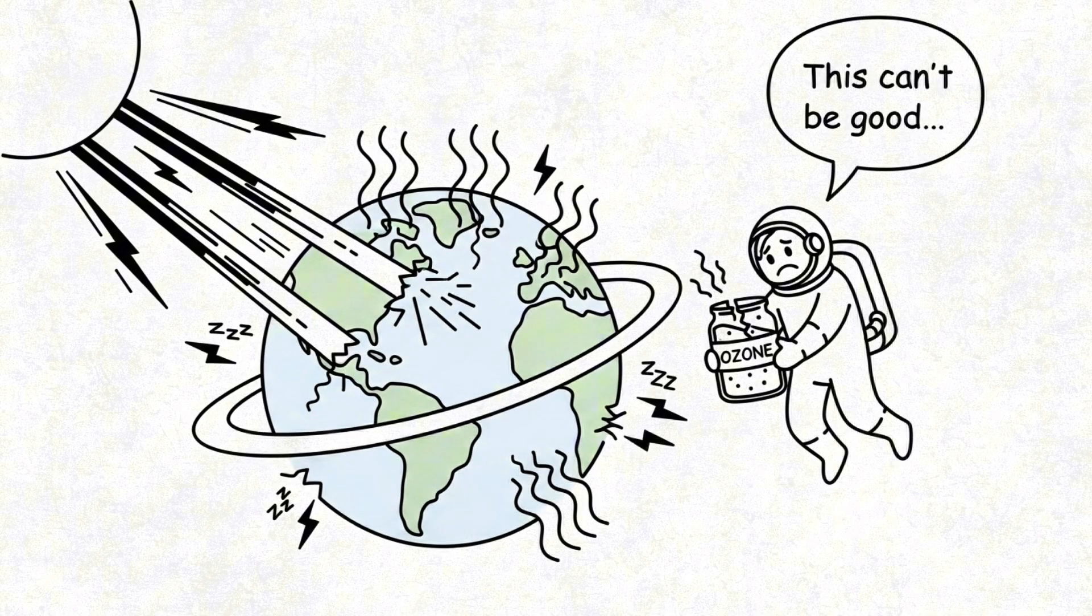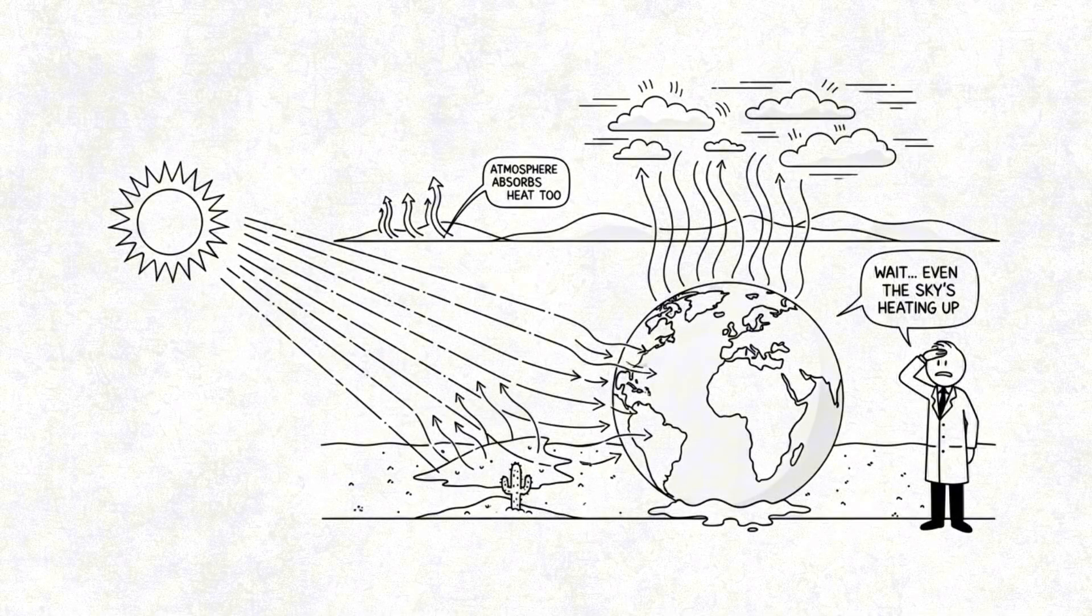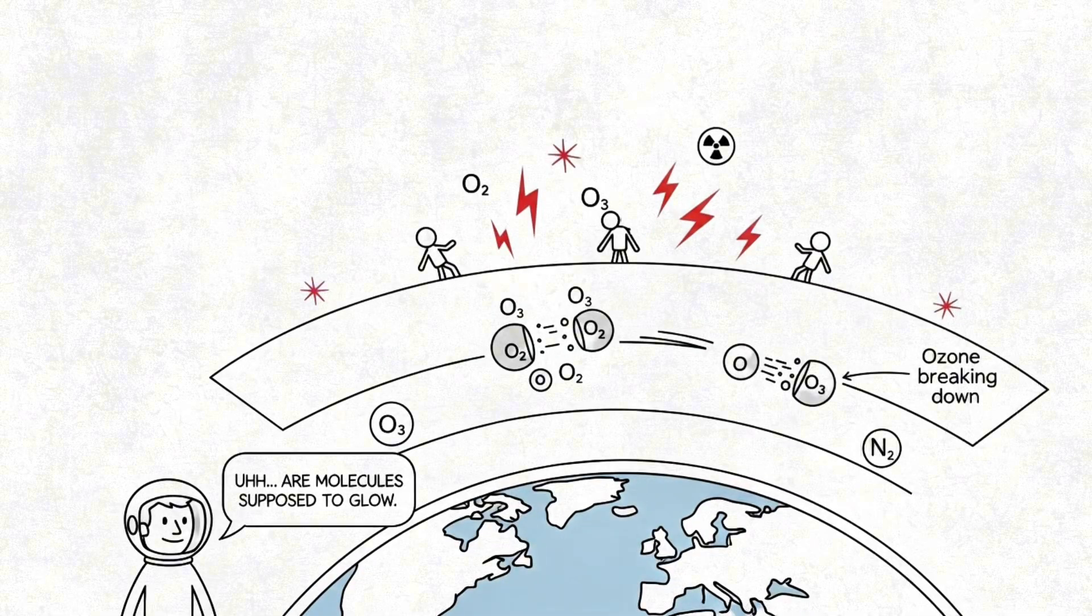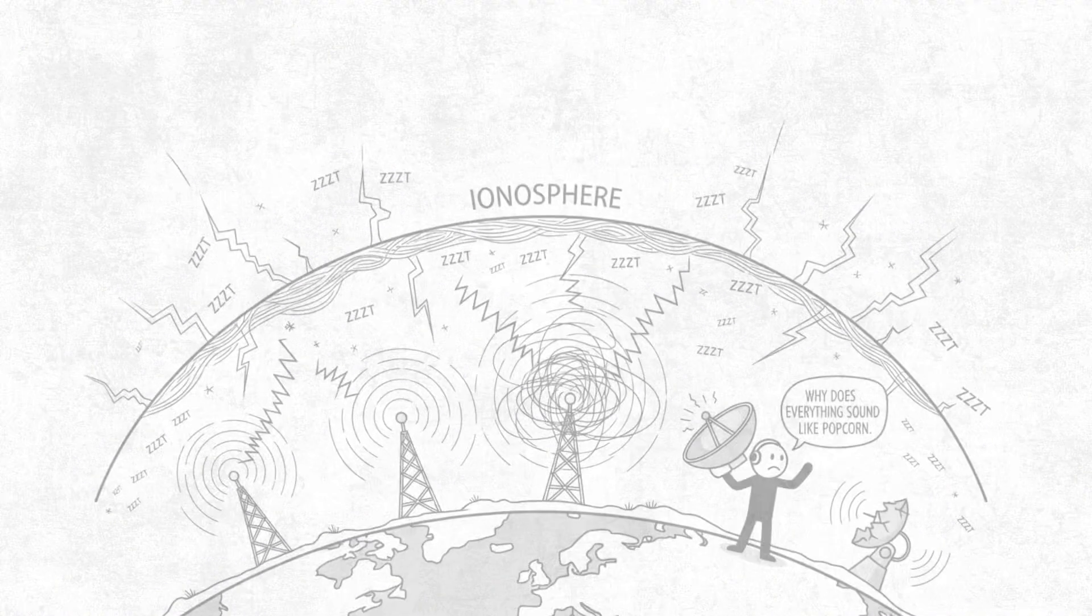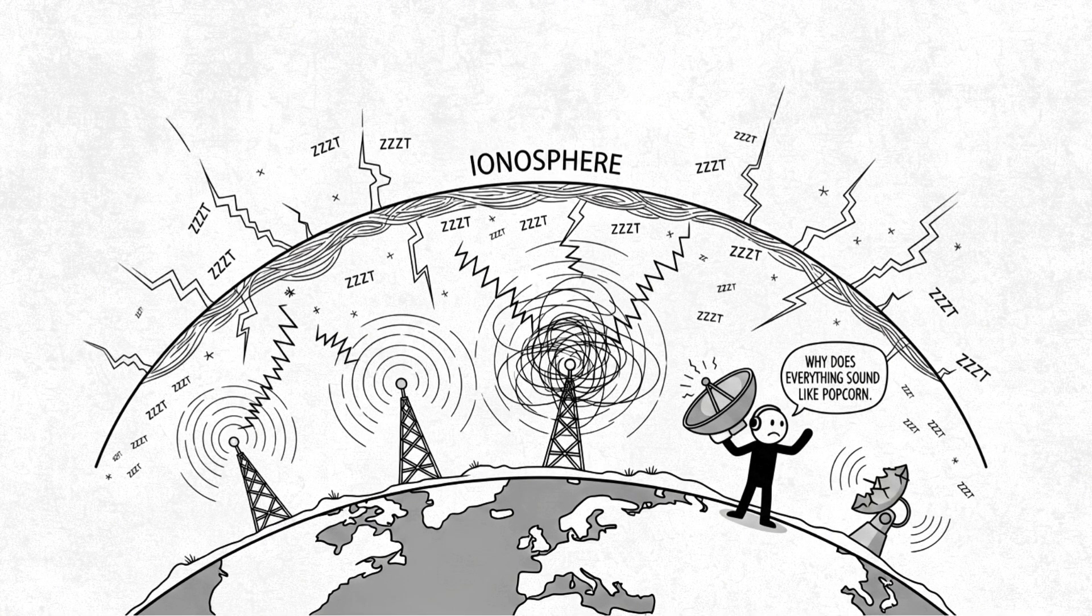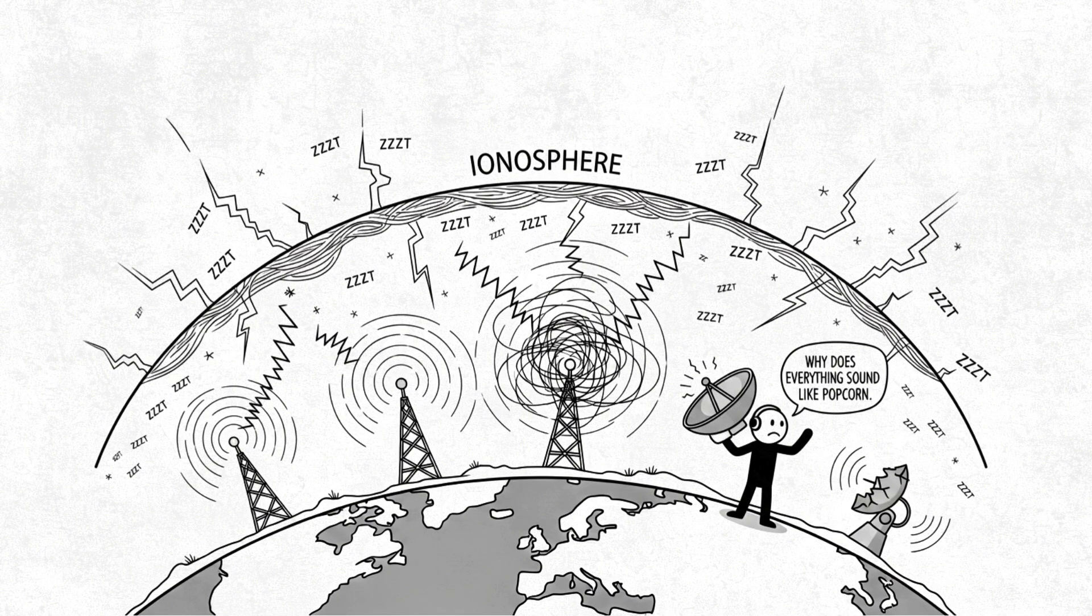And speaking of the atmosphere, that extra sunlight? It doesn't just heat the ground. It charges up molecules in the air. Ozone layers start breaking down. Radiation increases. The ionosphere, which handles our radio signals, turns into a sizzling electromagnetic soup.